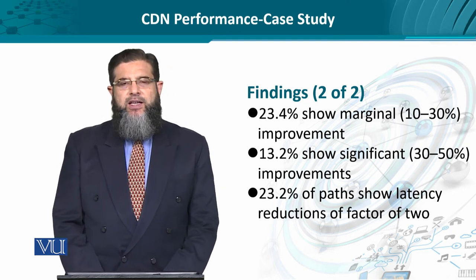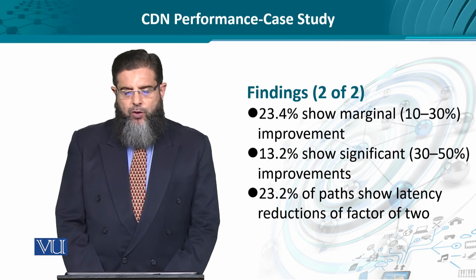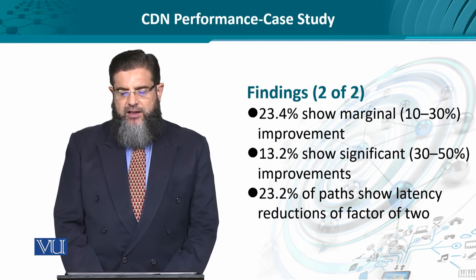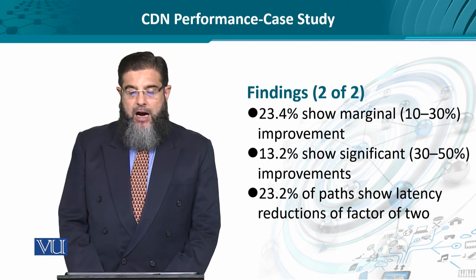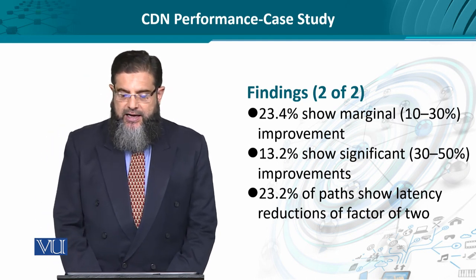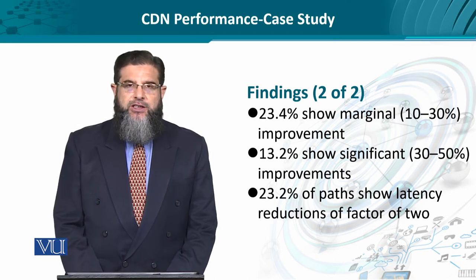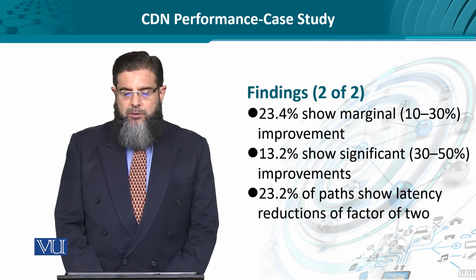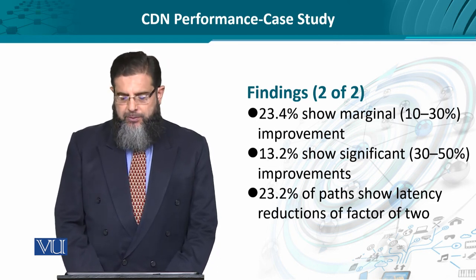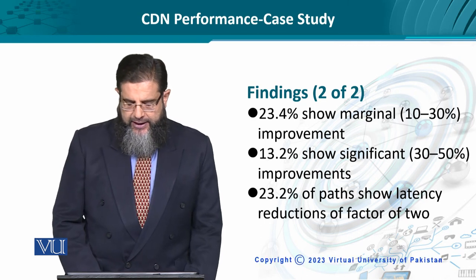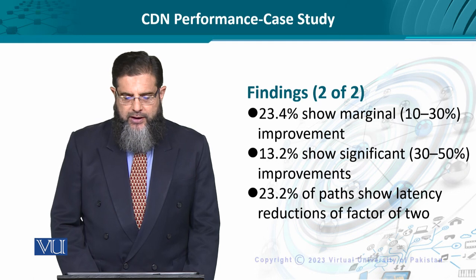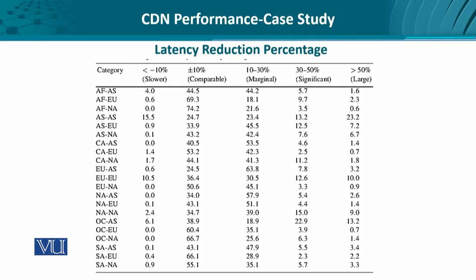Overall, the results are quite encouraging. For 23.4% of paths, the improvement from indirect routing is marginal — up to 30%. Then 13% of paths showed up to 50% improvement. And for 23% of paths, there was a double reduction in latency — a significant improvement. This confirms that overlay networking results in better utilization in terms of throughput and latency. The data can yield even more interesting insights on closer examination.